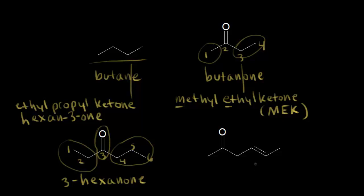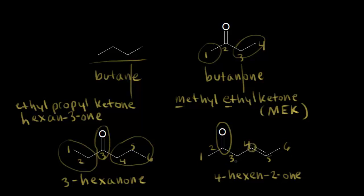Ketones take priority over things like double bonds, alkyl groups, and halogens. So for this molecule, you want to number to give your ketone the lowest number possible, not your double bond. Starting from the left: one, two, three, four, five, and six — we have a six-carbon ketone, so hexanone. But we have a double bond present, so it's going to be hexenone. The ketone is at carbon two and the double bond starts at carbon four, giving us 4-hexen-2-one. Since the hydrogens are on opposite sides of the double bond, that's trans or E, so E-4-hexen-2-one.